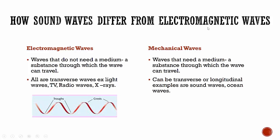How do sound waves differ from electromagnetic waves? Electromagnetic waves do not need a medium or substance to travel. All electromagnetic waves are transverse waves. Mechanical waves, waves that need a medium to travel. It can be transverse or longitudinal.